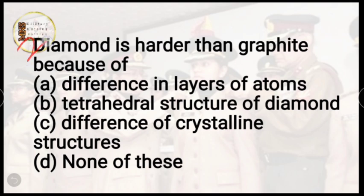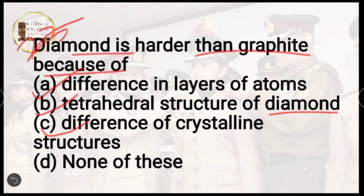Question 23: diamond is harder than graphite because of — difference in layer of atoms, tetrahedral structure of atoms, difference of crystalline structure, or none of these? In diamond, carbon forms four covalent bonds in a tetrahedral structure, while in graphite it forms a hexagonal structure. It is due to this structural difference that diamond is harder.